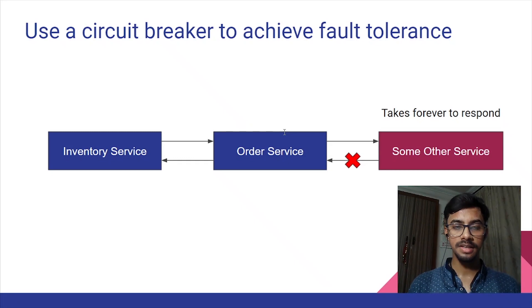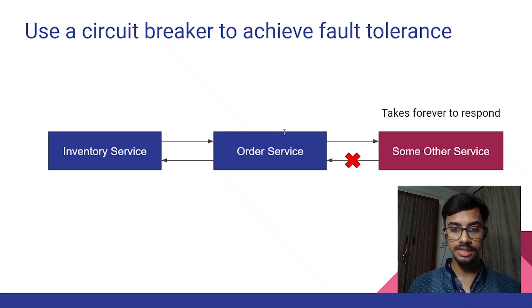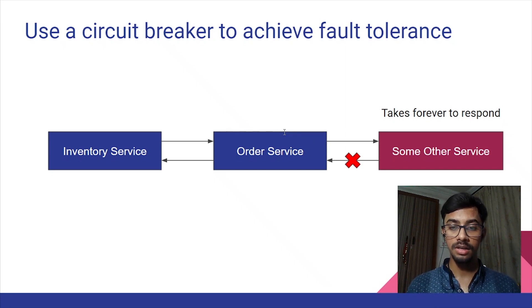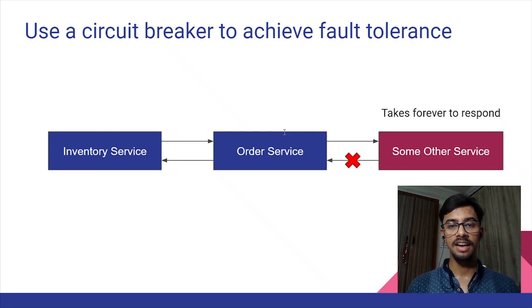Our next best practice is using a circuit breaker to achieve fault tolerance. If your microservice is dependent on another system to provide a response and that system takes forever to respond, your overall response SLAs will be impacted. To avoid this scenario, one best practice you can follow is to use a circuit breaker to time out the external call and return a default response or an error. This will isolate the failing services without causing cascade failures, keeping your microservices in good health.